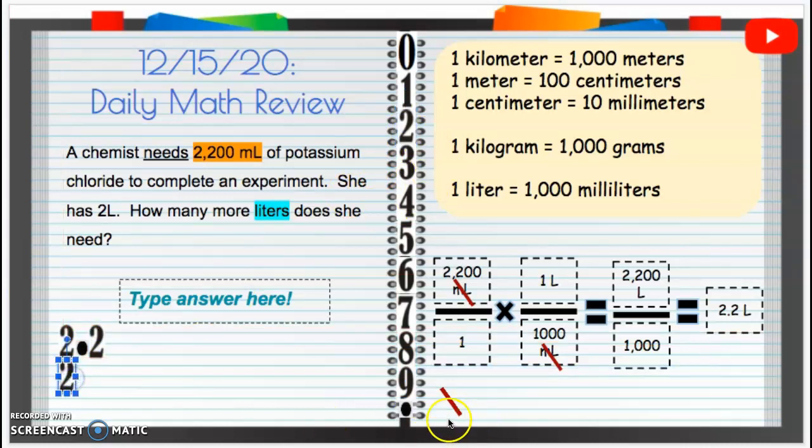Remember, line up those decimals. We can put a placeholder of 0 with that extra decimal. When we subtract those, we're left with 2 down here, and then 0, decimal 2. So 2 tenths more liters. She needs 2 tenths more liters.